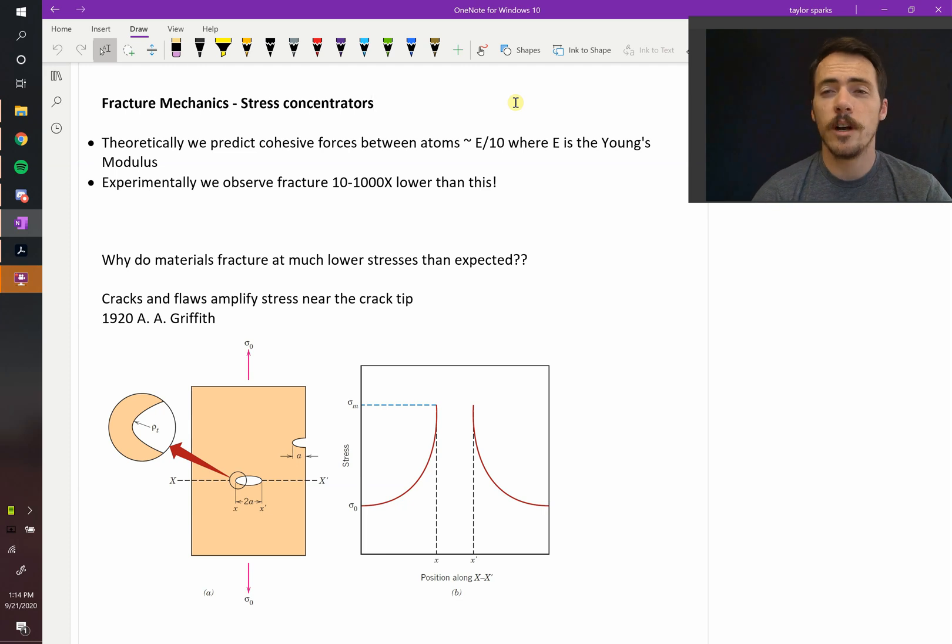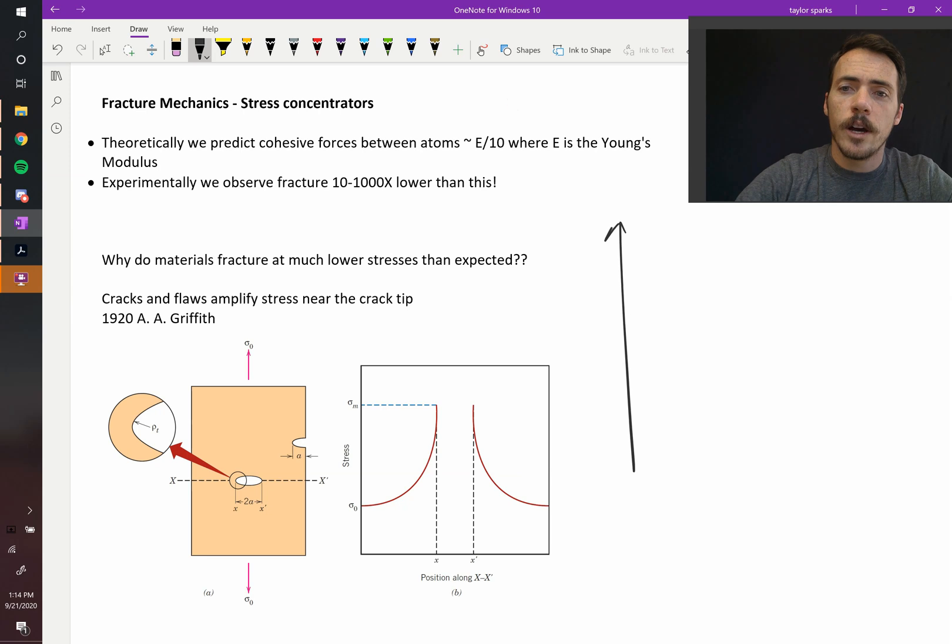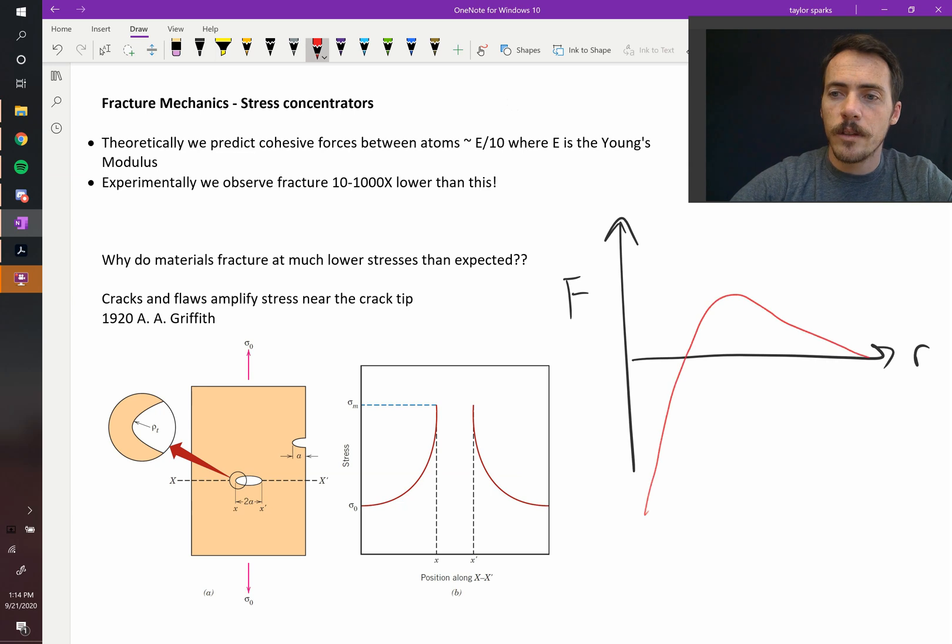Well, early on they realized that these must exist because they could calculate the theoretical force required to pull two materials apart. We did this in chapter two, right? You've got your force on this axis and you've got your interatomic separation, R over there. And we said for different materials that the curve looked something like this.